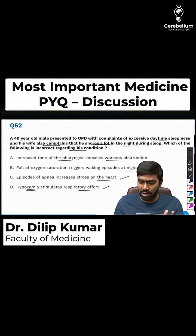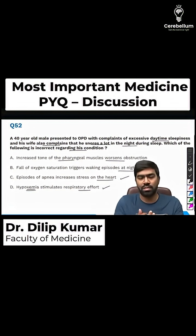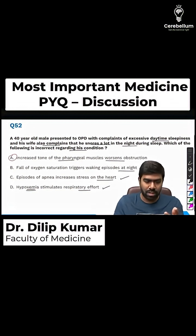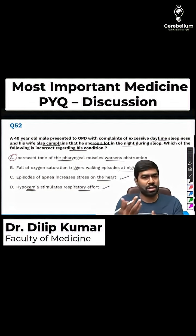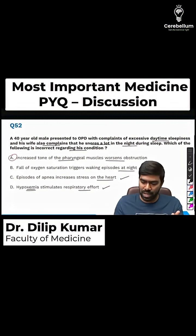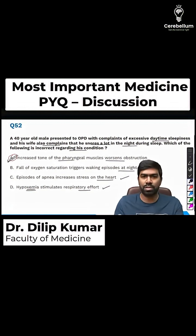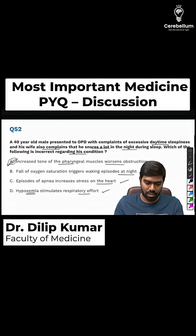What is wrong is Option A — that increased tone of pharyngeal muscles forces obstruction. This is incorrect. In fact, it is reduced tone or flaccidity of the pharyngeal muscles that causes the tongue to fall back, resulting in obstruction at the level of the upper airway pharynx. So the correct answer is Option A, because it's a wrong statement — it's decreased tone, not increased tone.